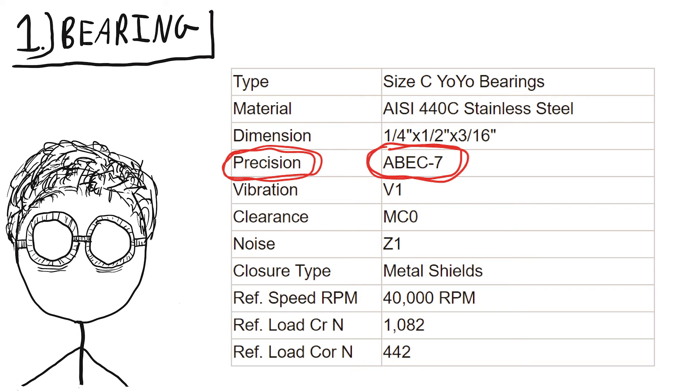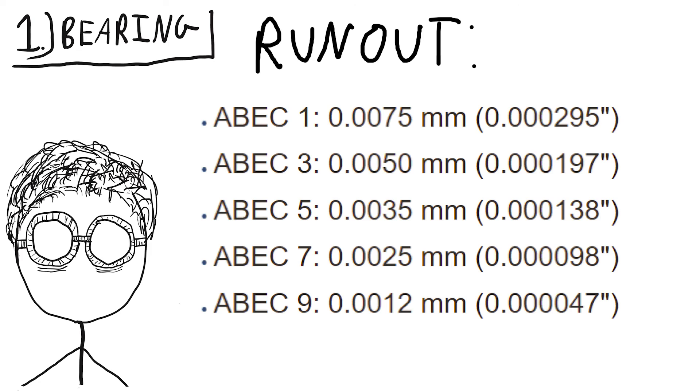First of all, standard yoyo bearings are certified as something called ABEC 7, which is basically just a certification that says, 'I am this precisely made, I promise.' Where the number quantifying precision is called runout, and basically it means, 'I am only going to be above or below the number I said I was going to be by this much.'